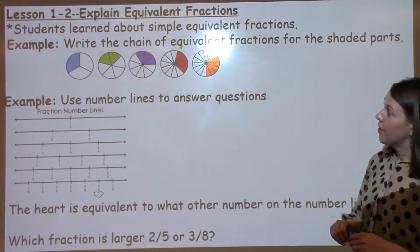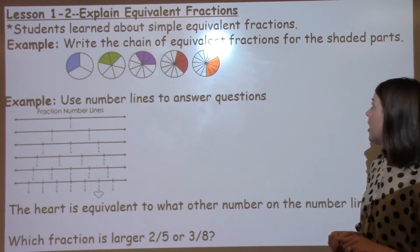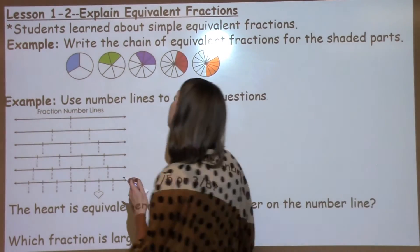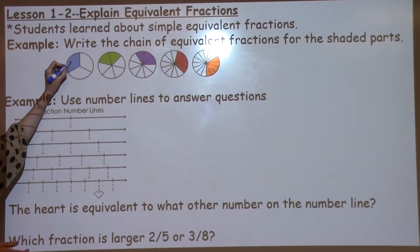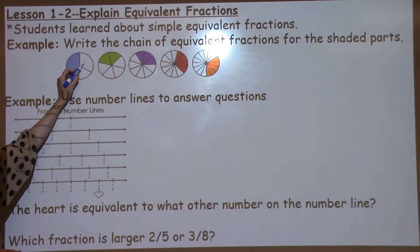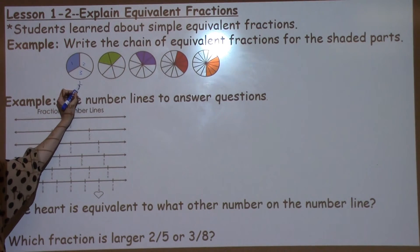The first thing that we learned about today was equivalent fraction chains. So we're going to look at the shaded parts of these fractions. The first fraction we have is 1 shaded out of the 3, so we have 1 third.